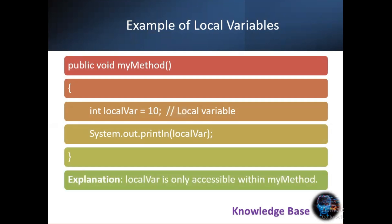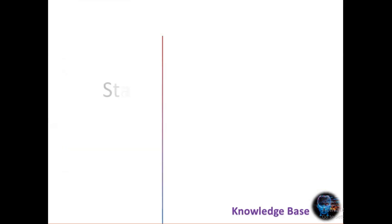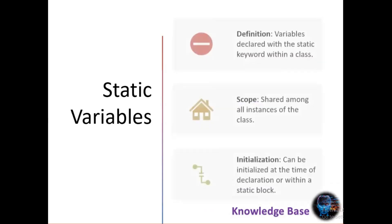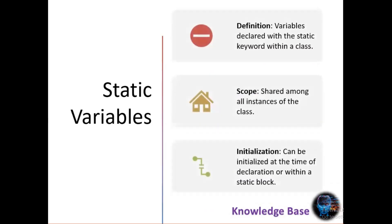Next we have static variables. Static variables are declared with the static keyword within a class. Unlike local variables, static variables are shared among all instances of the class. This means that if one instance changes the value of the static variable, all other instances will see this change. Static variables can be initialized at the time of declaration or within a static block.